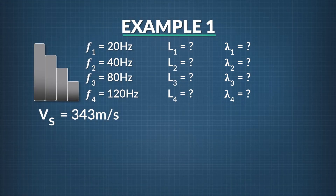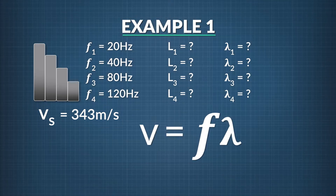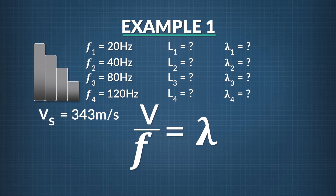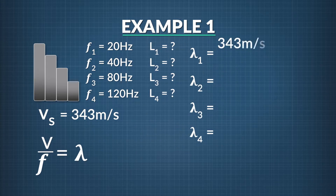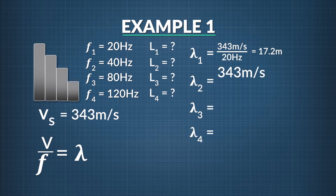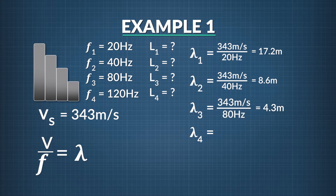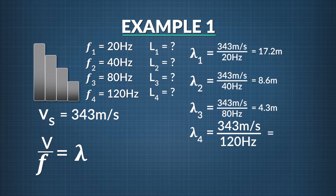The first thing we can do is figure out the wavelengths of these notes. The sound in the pipes travels in air at about 343 meters per second. Since wave speed equals frequency times wavelength, we solve for wavelength by dividing wave speed by frequency. Lambda 1 equals 343 divided by 20 hertz = 17.2 meters. Lambda 2 equals 343 divided by 40 hertz = 8.6 meters. Lambda 3 equals 343 divided by 80 hertz = 4.3 meters. Lambda 4 equals 343 divided by 120 hertz = 2.9 meters.